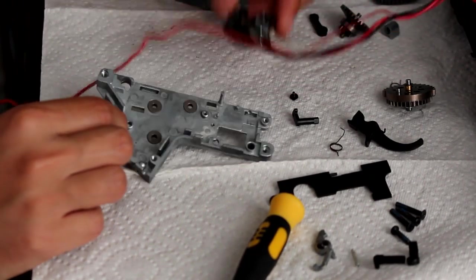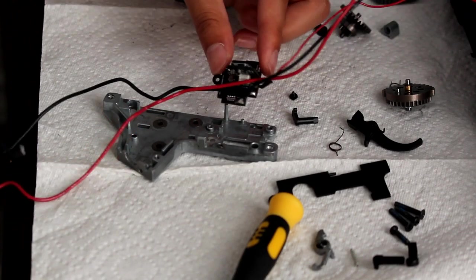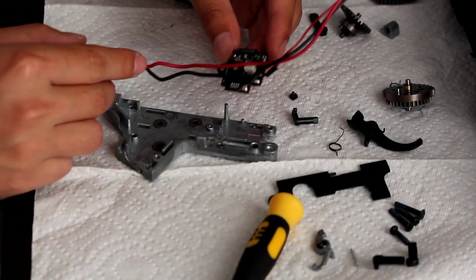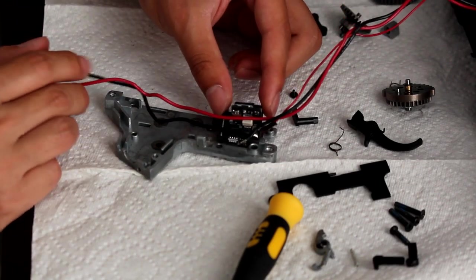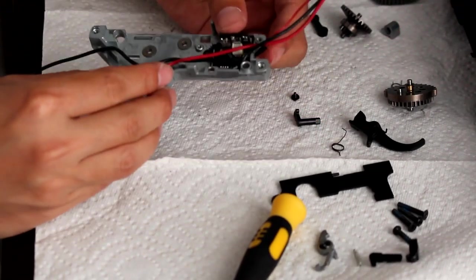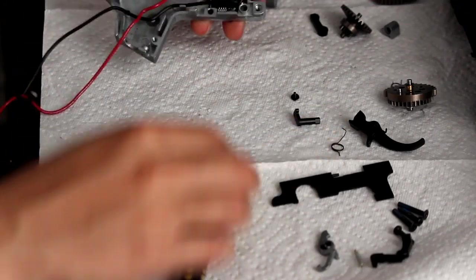Now your trigger is going to look different than mine because this is actually an AWS MOSFET and it replaces the original trigger assembly that's in the gearbox. But it should install just the same. So you're going to go ahead, slide in your trigger, make sure it sits flush in the gearbox, and then you're going to screw it in.